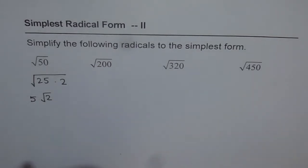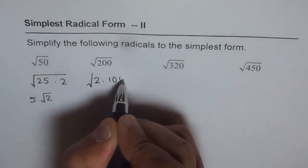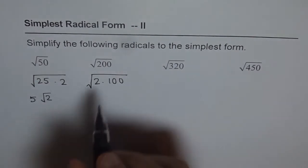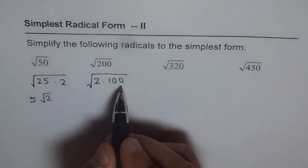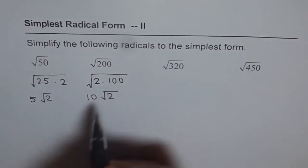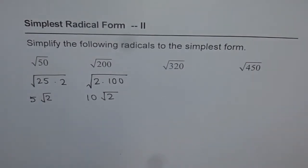Now, let's do 200. 200 could be written as square root of 2 times 100. 2 times 100 is 200. Now, 100 is a perfect square. So I can write this as 10 square root of 2, since 100 is a perfect square.